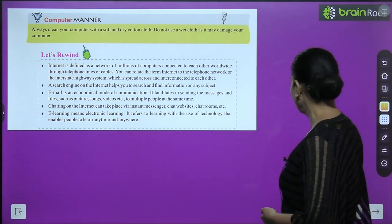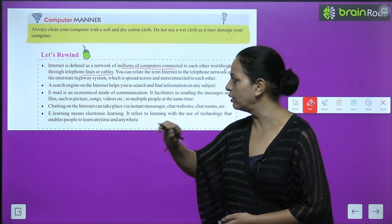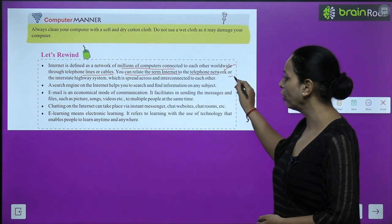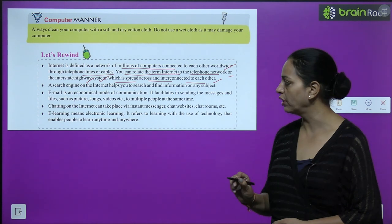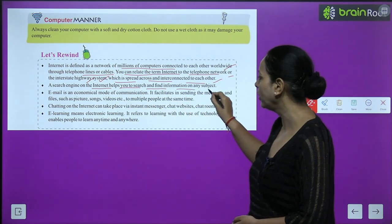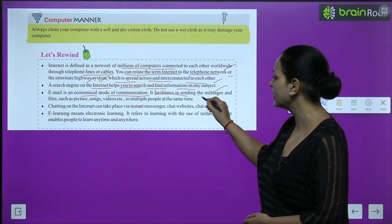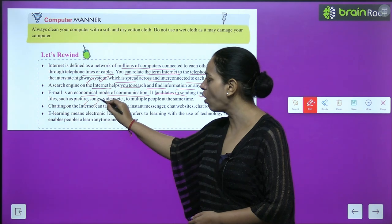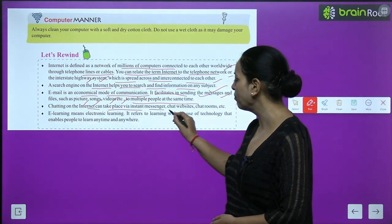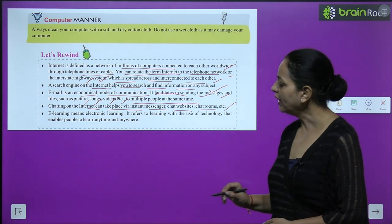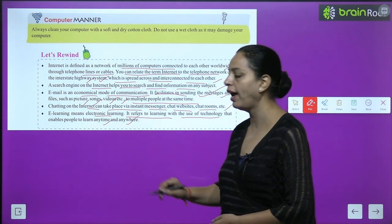Let us rewind. The internet is defined as a network of millions of computers connected worldwide through telephone lines or cables, relatable to the telephone network or interstate highway system. A search engine helps you find information on any subject. Email is an economical mode of communication that facilitates sending messages and files such as pictures, songs, and videos to multiple people at the same time. Chatting on the internet can take place via instant messenger, chat websites, and chat rooms. E-learning means electronic learning — it refers to learning with the use of technology that enables people to learn anytime and anywhere.